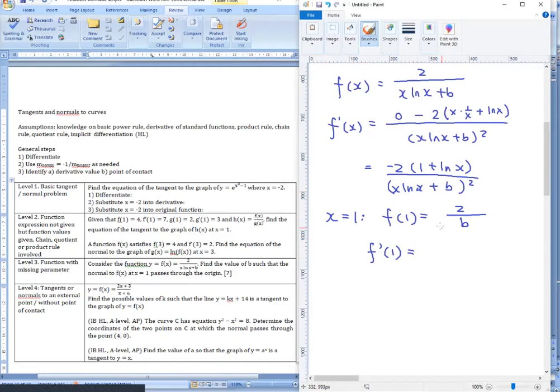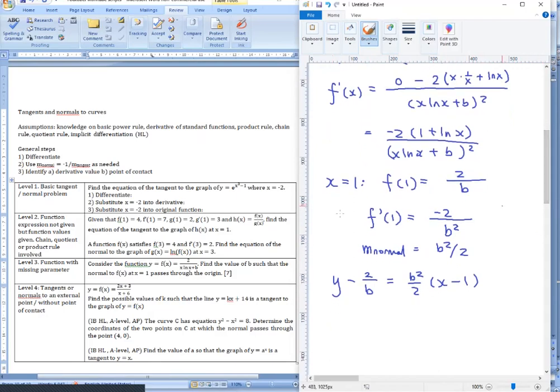f1 equals to two all over one natural log one. Well fortunately for us natural log one is zero. So zero plus b is just b. f prime 1 meanwhile we plug one into the thing. I think the numerator becomes negative two alone and the denominator becomes zero plus b all squared so b squared. And then because this is the normal question we have to take a negative reciprocal which becomes this. And then the equation of the normal can be written to be y minus 2 over b equals to the gradient b over 2 x minus 1. And you know that the graph goes through the origin thankfully. So we can substitute in x equals to 0 and y equals to 0.